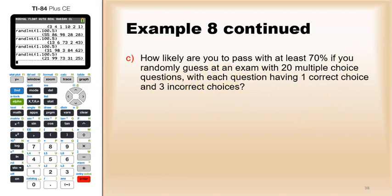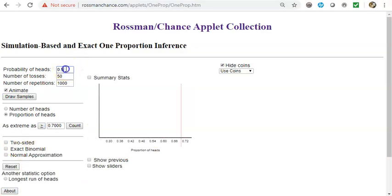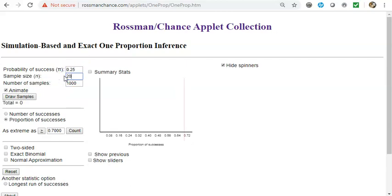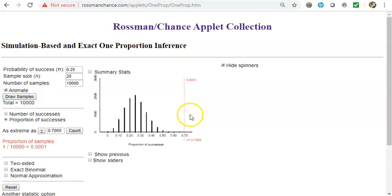If you just randomly guess, you're going to randomly guess correct 25 percent of the time. The 20 questions. So reset. Now my probability of success is down to 25 percent. Let's say 20 questions. Draw a thousand. Let's make it 10,000. 10,000 times I got, there is, looks like one success out of 10,000. So very unlikely.